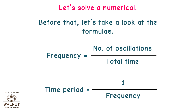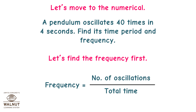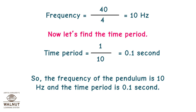Let's solve a numerical. Before that, let's take a look at the formulae. Frequency is equal to number of oscillations divided by total time. Time period is equal to 1 upon frequency. A pendulum oscillates 40 times in 4 seconds — find its time period and frequency. Frequency equals 40 divided by 4, which equals 10 hertz. Time period equals 1 upon frequency, which equals 1 upon 10, which equals 0.1 seconds. So, the frequency of the pendulum is 10 hertz and the time period is 0.1 seconds.